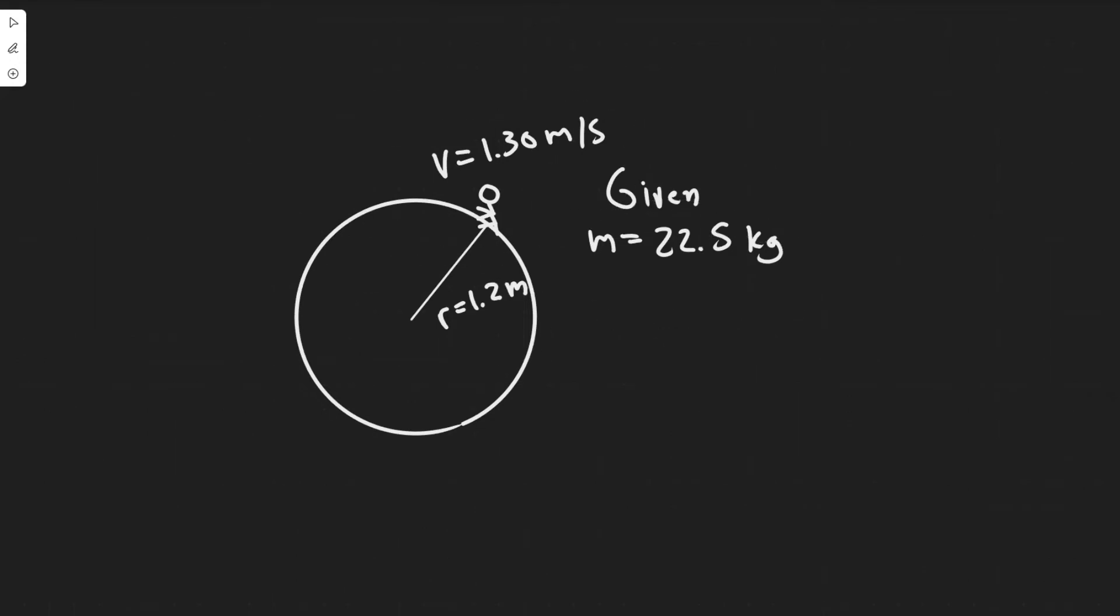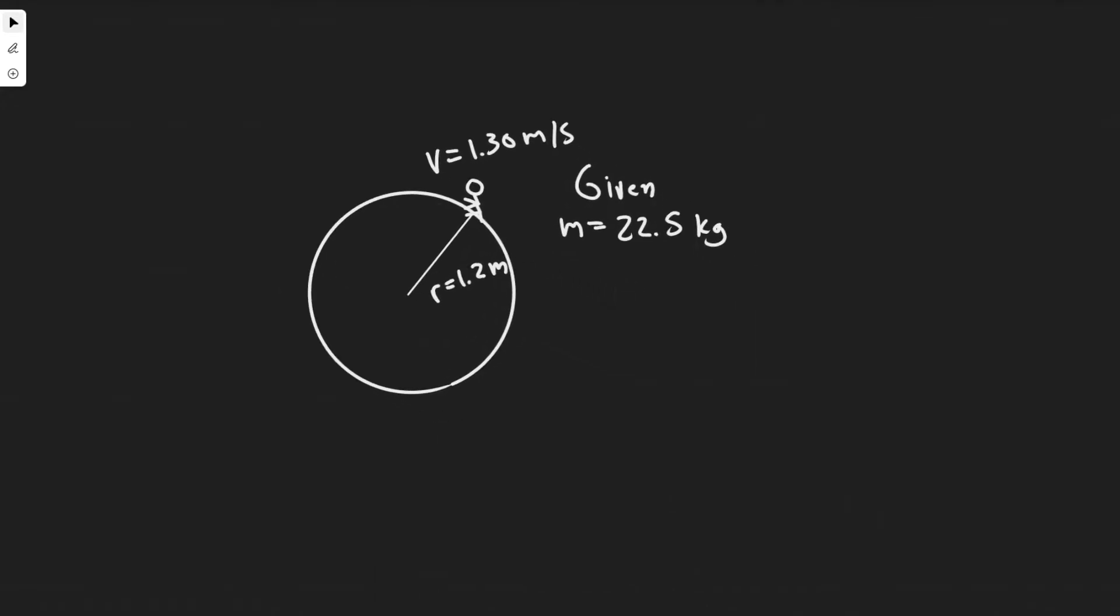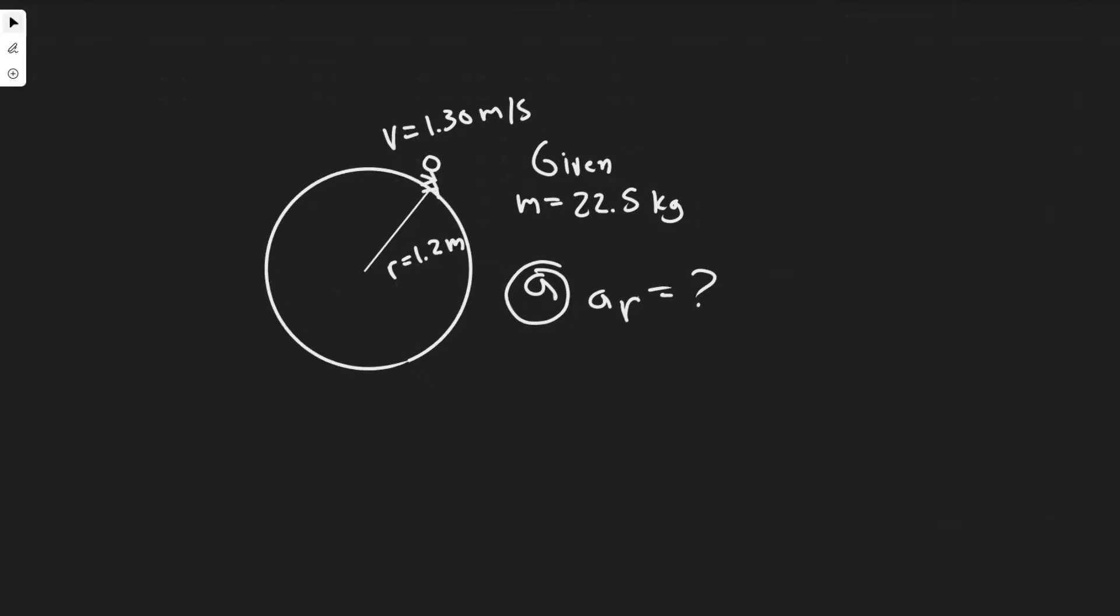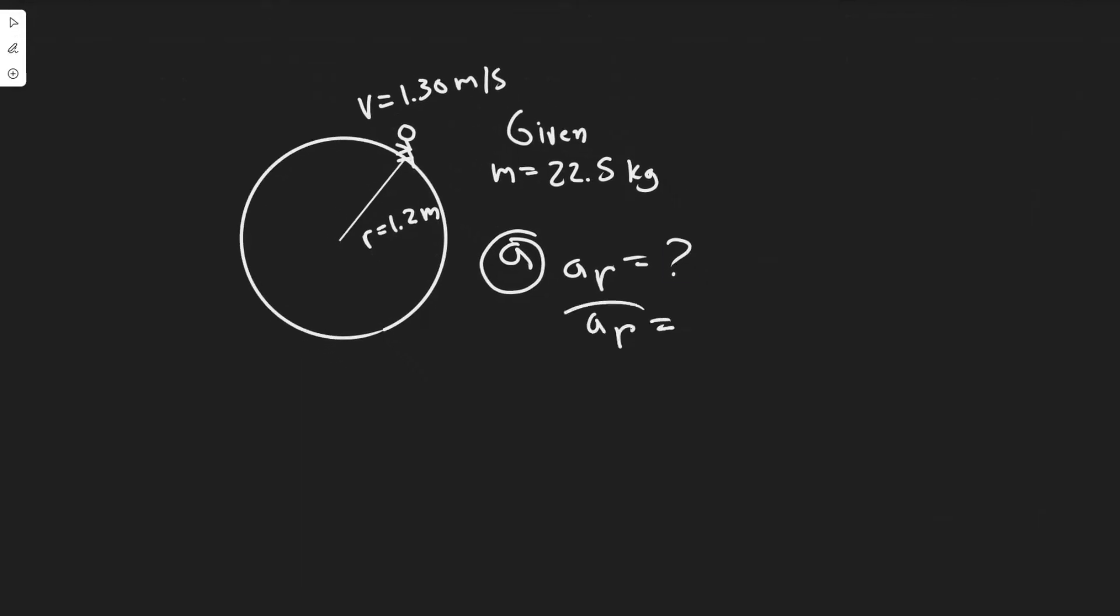And so to calculate A, they're asking for the centripetal acceleration, so we denote that with a sub r. And in order to solve for that, we're going to plug into a basic formula, which is centripetal acceleration equals velocity squared divided by the radius.